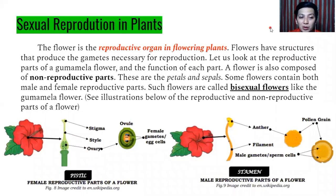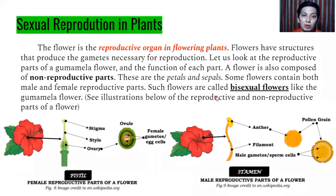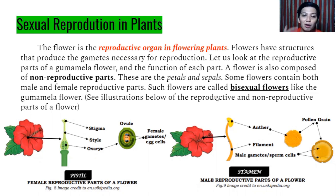An example of a bisexual flower is the hibiscus or gumamela flower, which has both female and male parts. The female part of the gumamela flower is the pistil. The pistil is composed of the stigma, the style, the ovary, and the ovule. Remember: female — pistil.